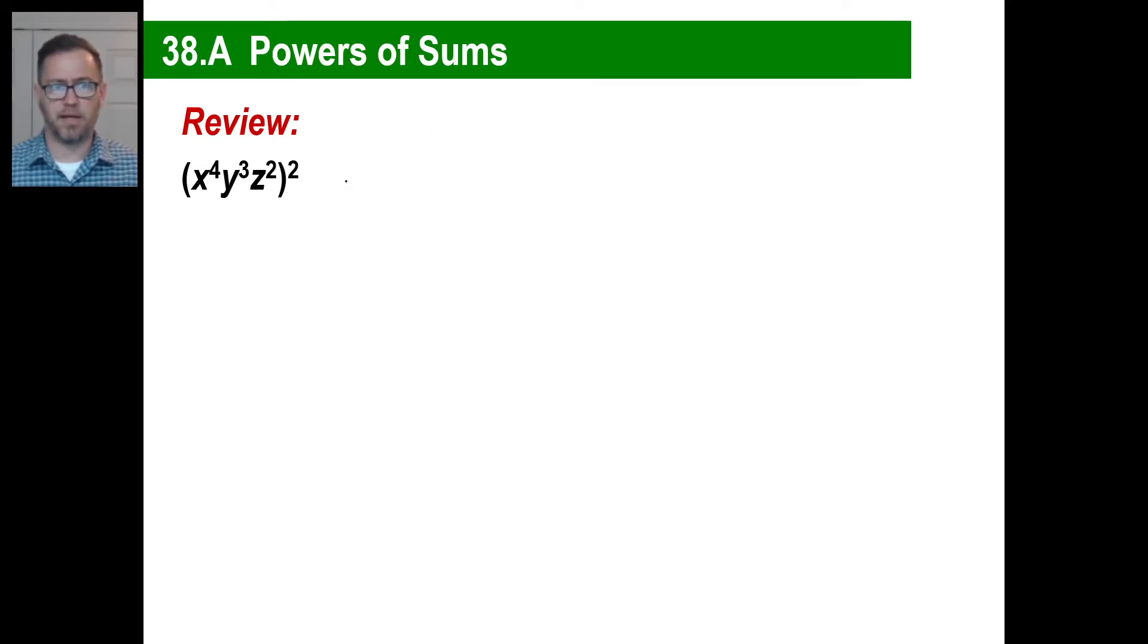What you're actually doing is saying x to the 4th times x to the 4th, y to the 3rd times y to the 3rd, z to the 2nd times z to the 2nd, right? We just multiply. So it's going to be x to the 8th, y to the 6th, z to the 4th. What we're actually doing when we square something is we're multiplying it by itself. But the rule is, if there are exponents to an exponent, you multiply those.